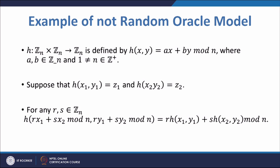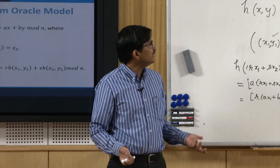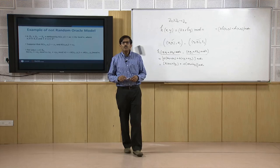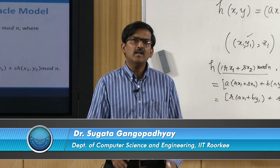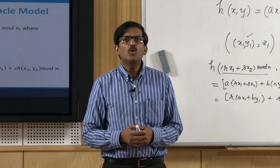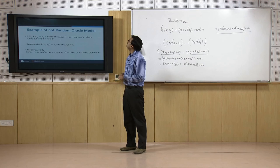What this means is that if I have these two known pairs, this function is such that without evaluating the function I will be able to know the values of the function at several points — namely points of this type. And therefore, if I later query at those points, the hash values obtained are not equally distributed over the codomain; they are determined with probability 1. Therefore, this function does not satisfy the random oracle model.